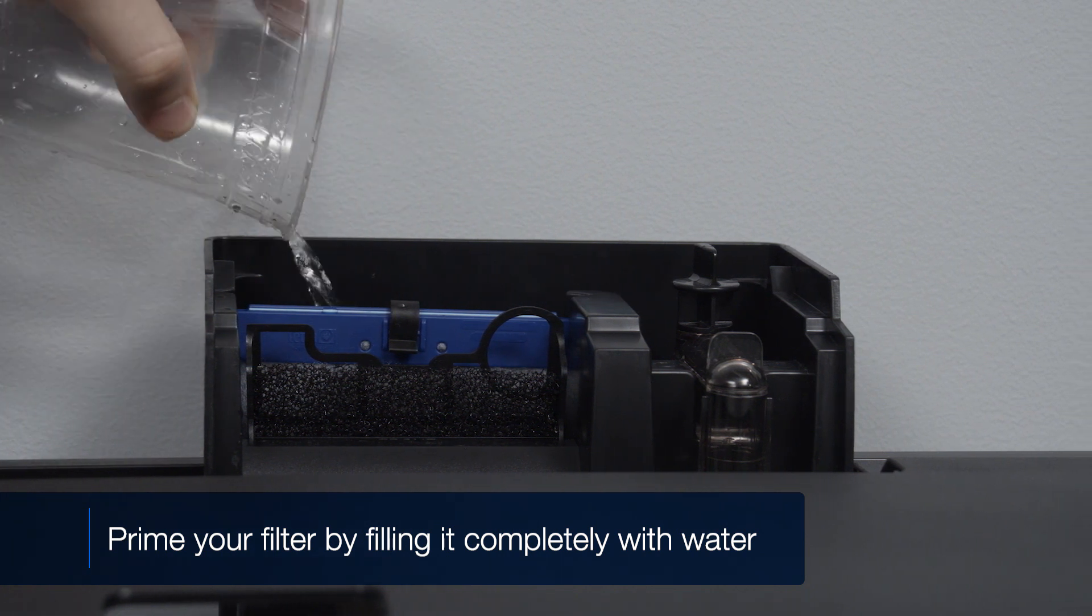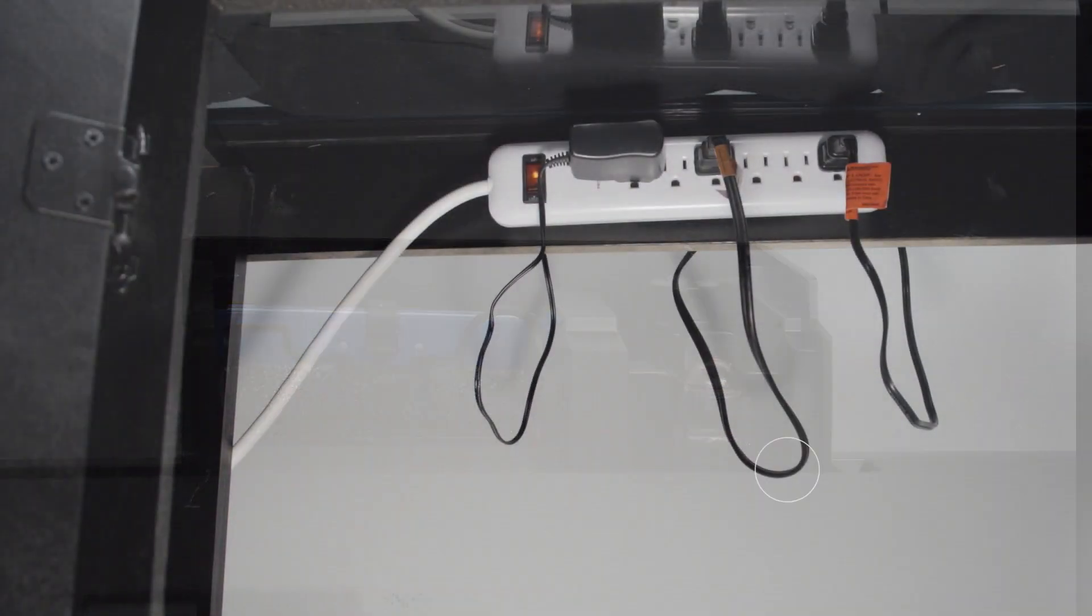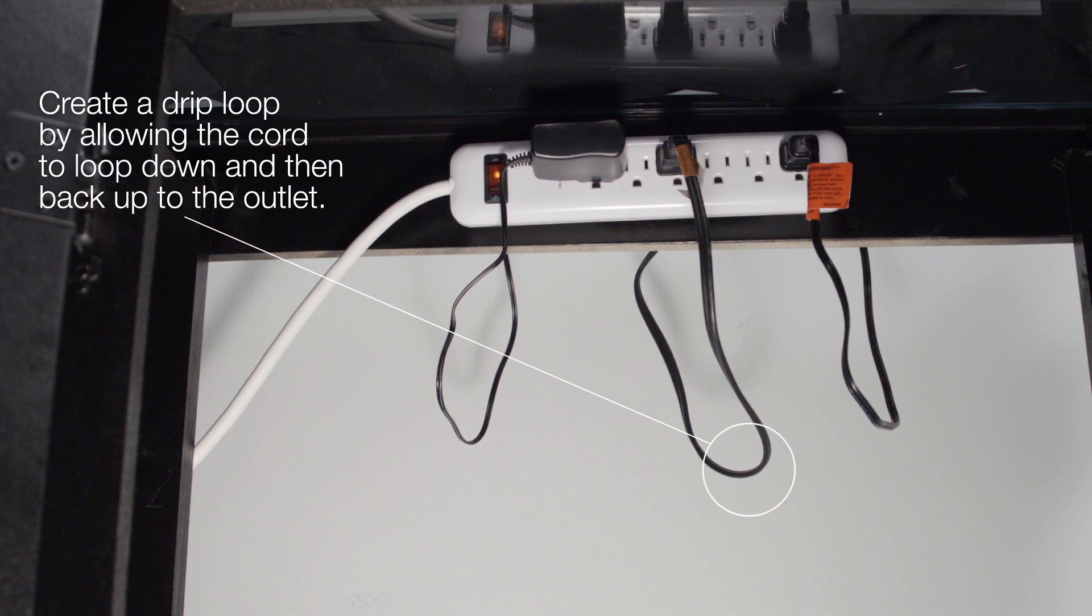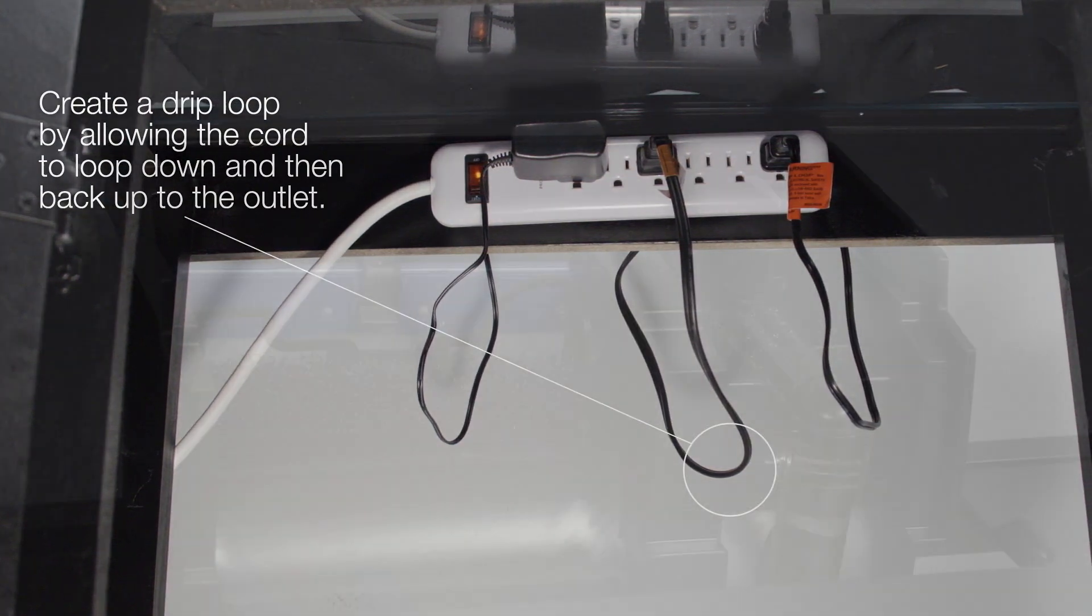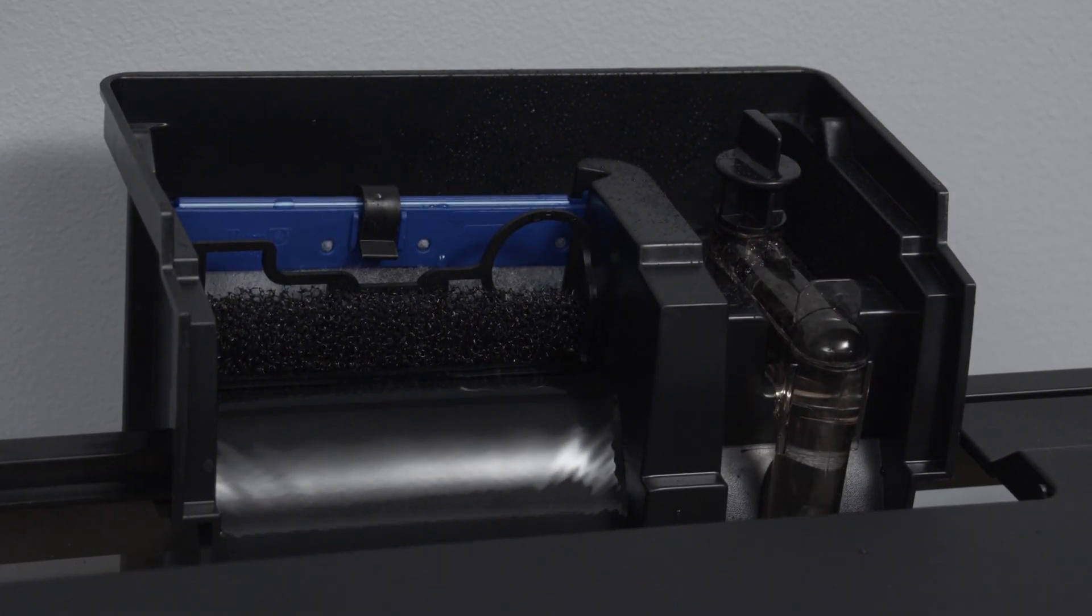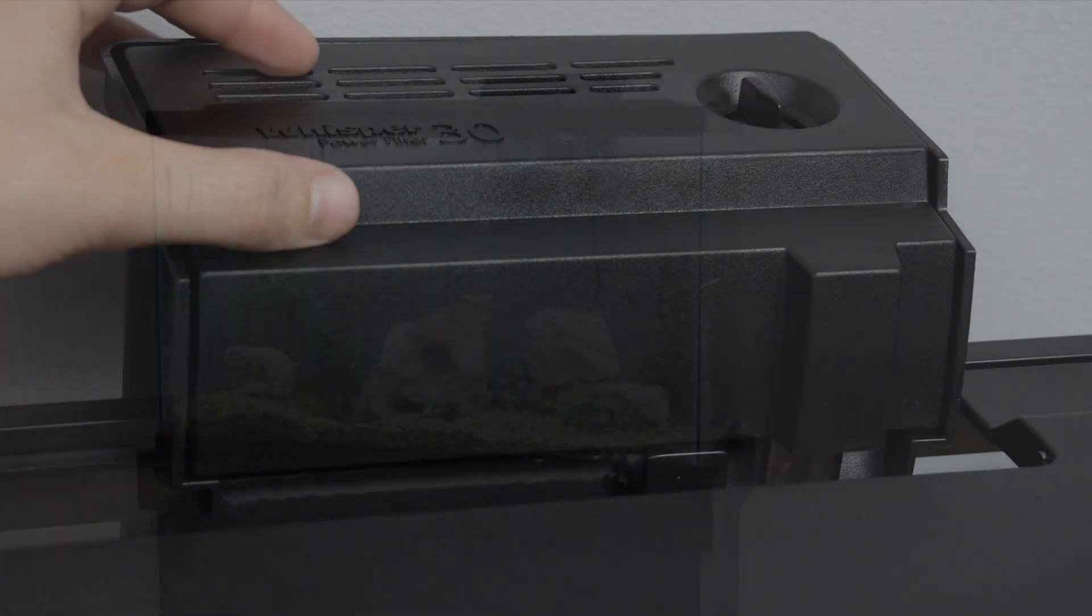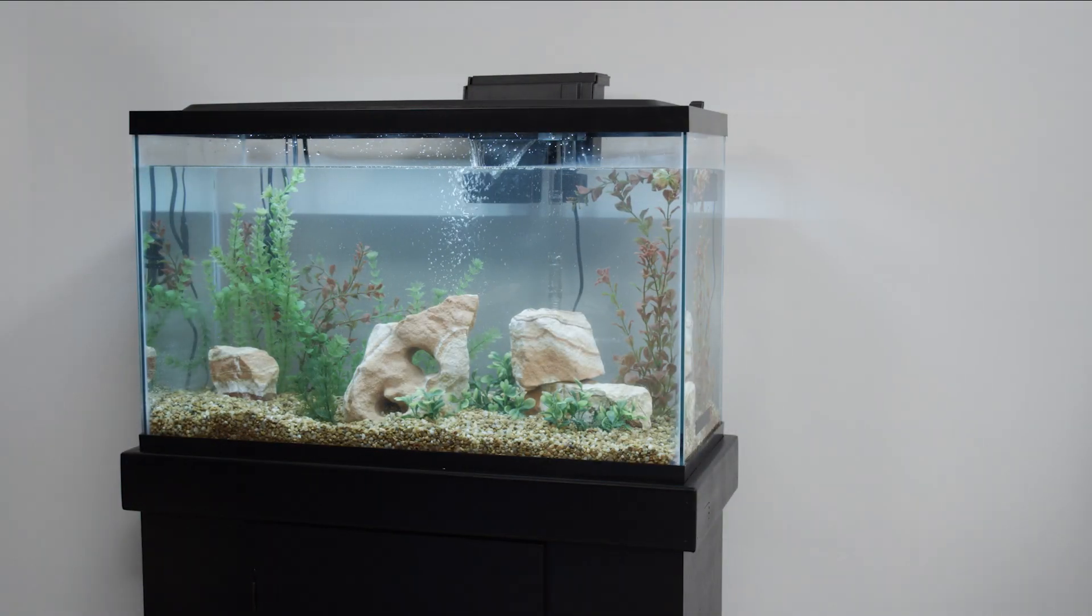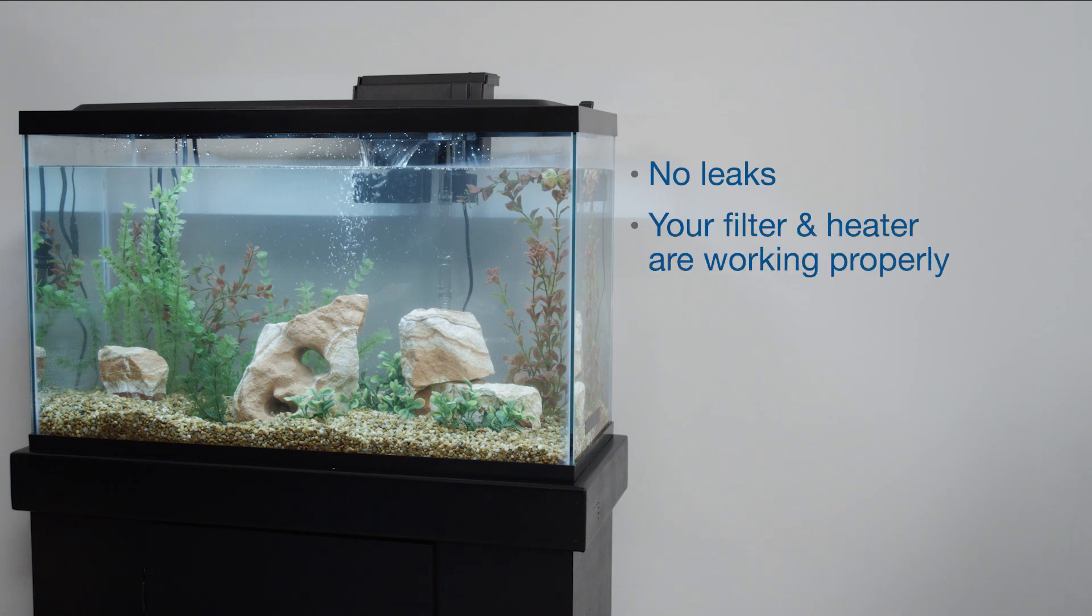You can now plug in your equipment. To prevent water from flowing into your power strip or outlet, be sure to create a drip loop with your power cord. Once all your equipment is plugged in and you see your filter is running, place the cover back on, and allow your aquarium to run for 24 hours to make sure there are no leaks and things are working properly.